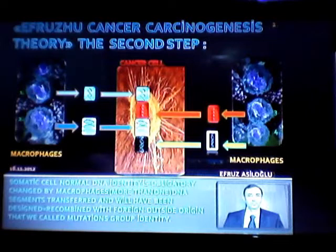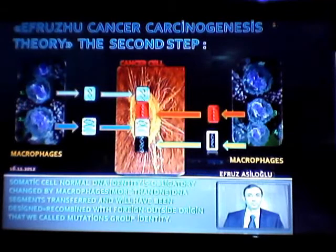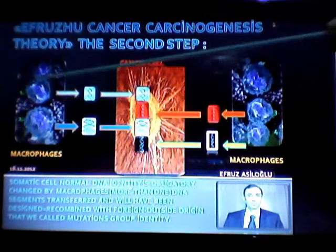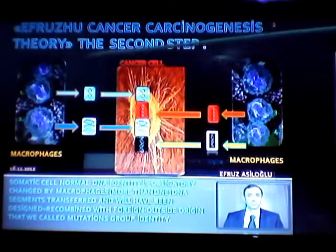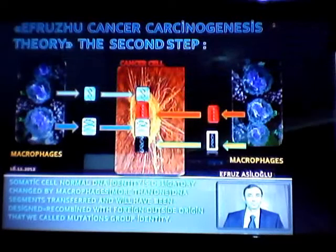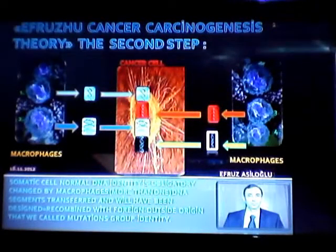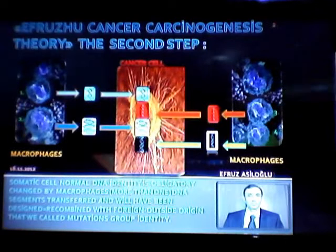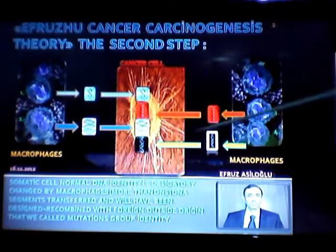This photo shows us how this cancer cell — at first, the somatic problematic cells — changes its identity. Macrophages come to this area, and this relationship shows a summary of how DNA segments are transferred to other cells.